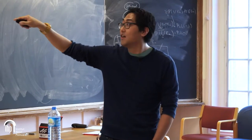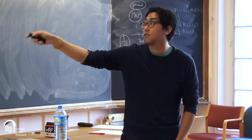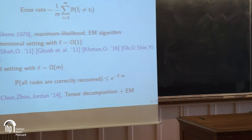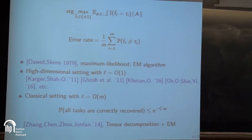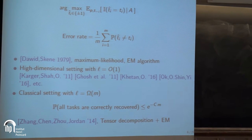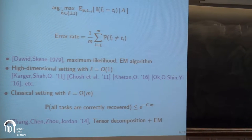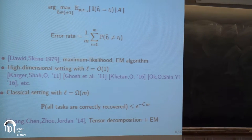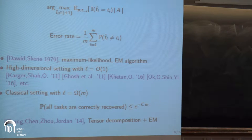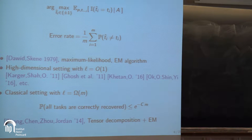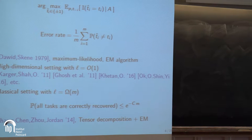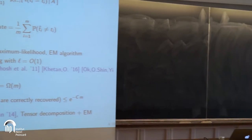For each task T_i you'd like to compute the likelihood given all responses A and choose the more likely label. The metric is probability of error on each task — on average, how many errors did you make? But computing exact likelihoods is computationally infeasible. This model was studied since 1979 by Dawid and Skene, who assumed uniform priors on tasks and worker qualities and used EM without theoretical guarantees. We are interested in the high-dimensional regime with L order one and want to characterize the minimax rate of sample complexity and probability of error.